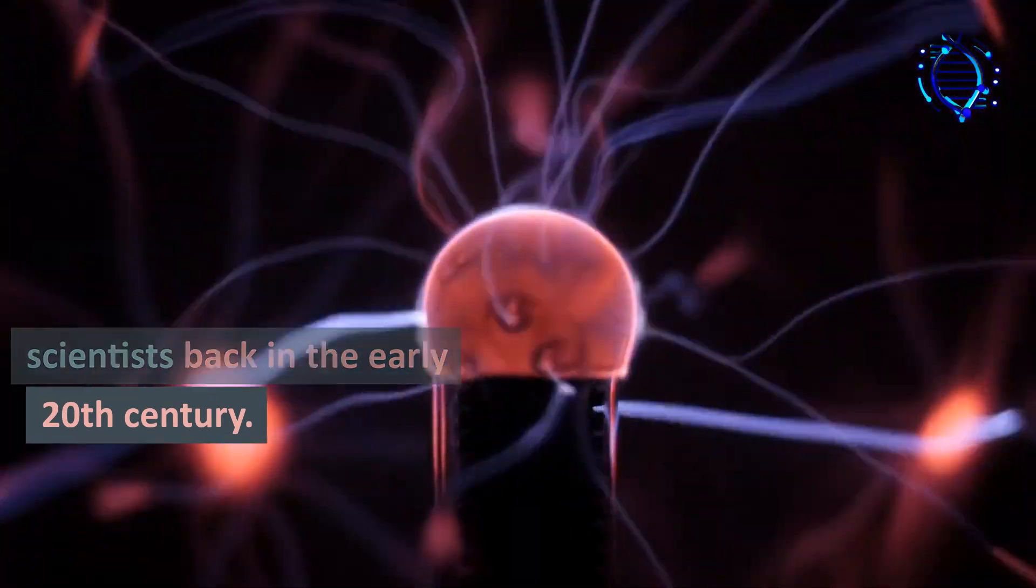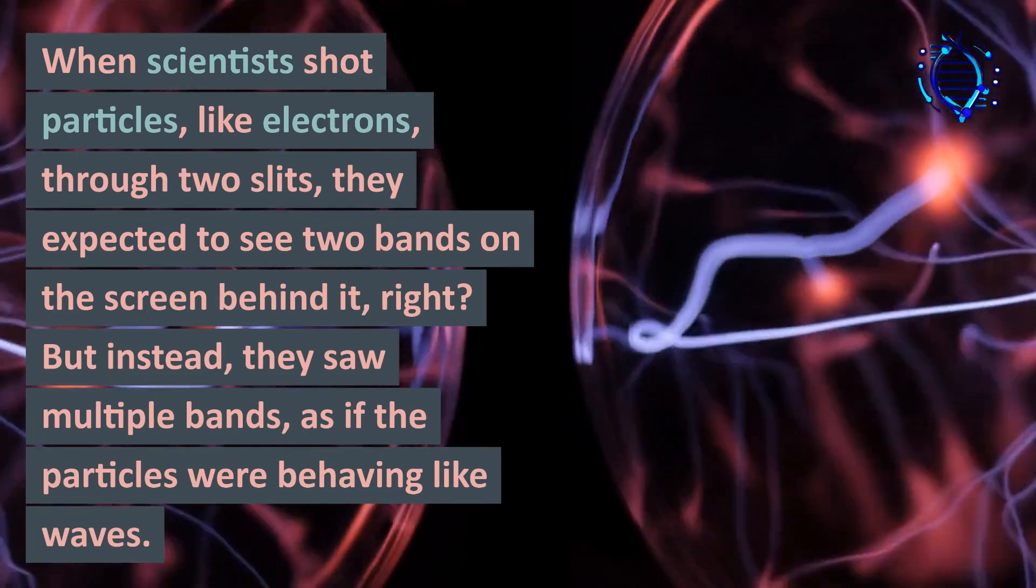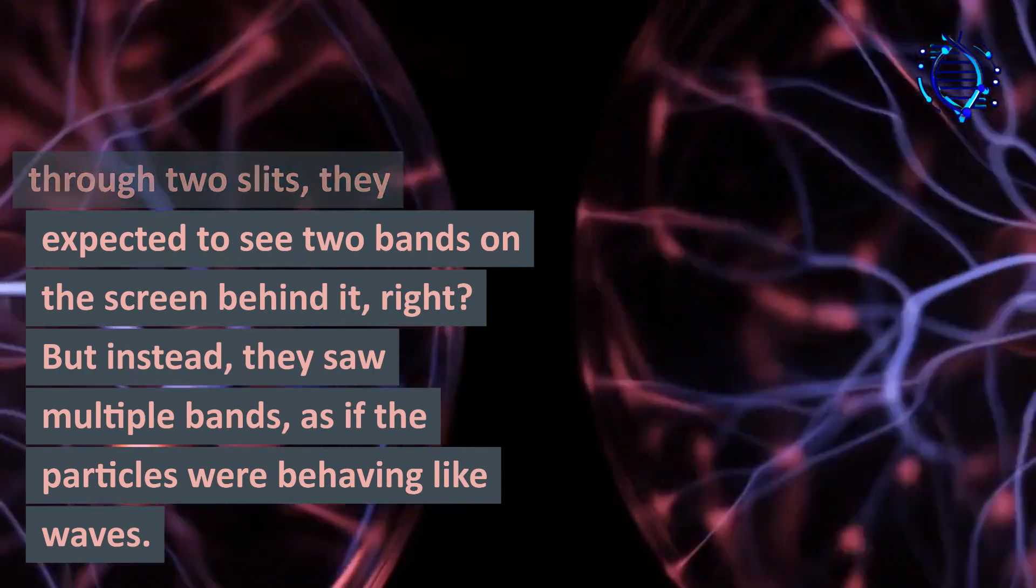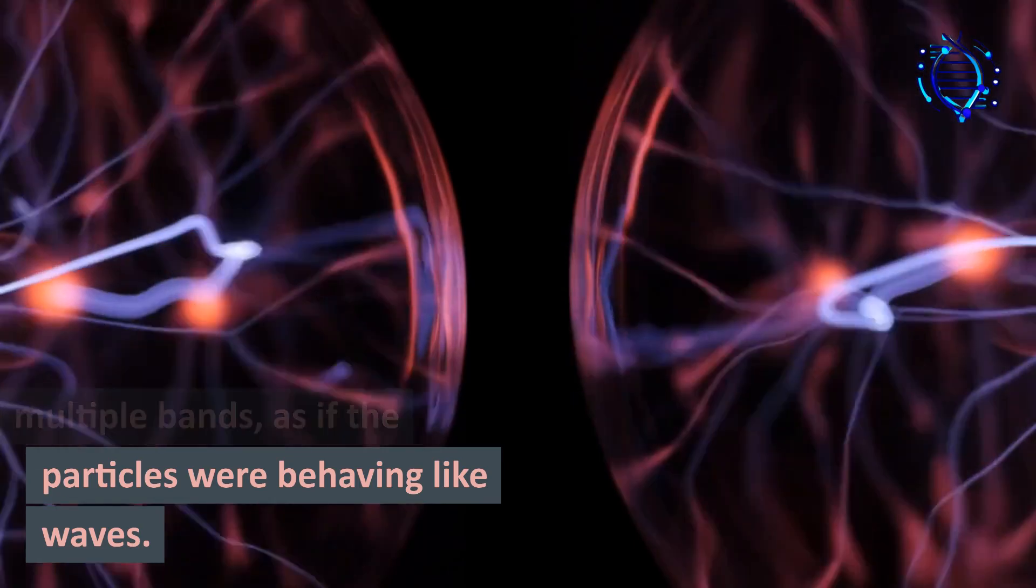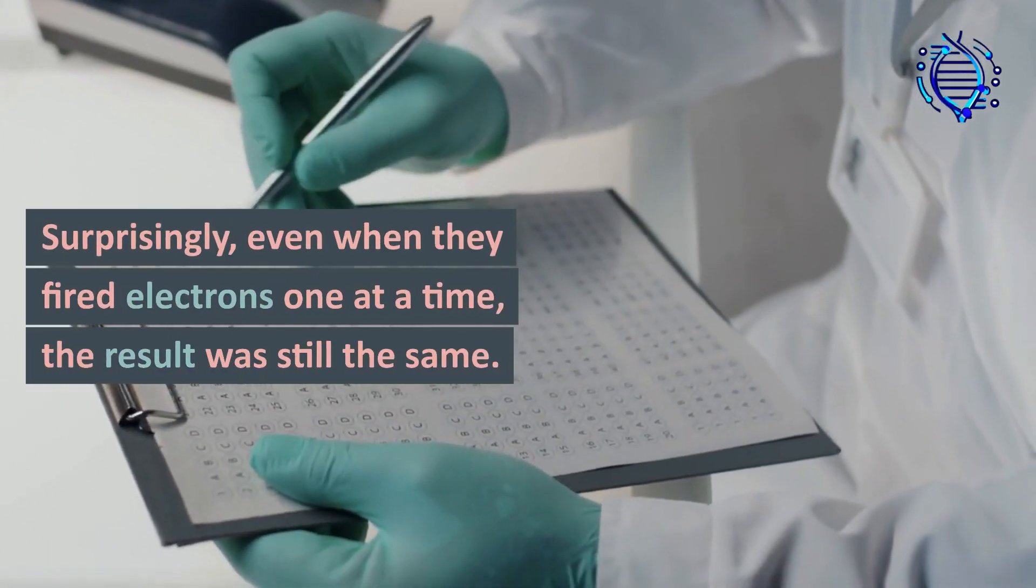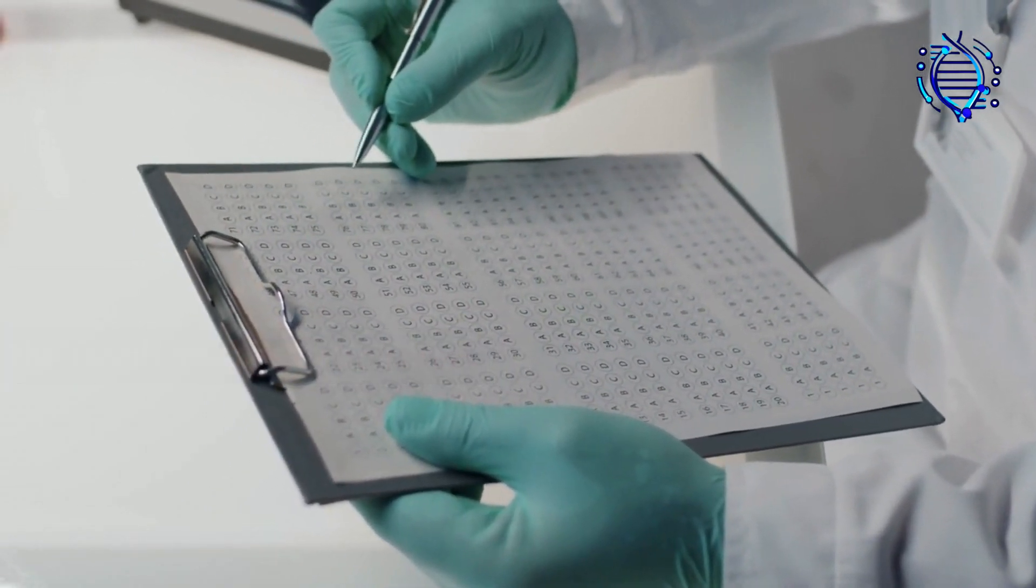Let's take, for instance, the famous double-slit experiment that baffled scientists back in the early 20th century. When scientists shot particles like electrons through two slits, they expected to see two bands on the screen behind it, right? But instead they saw multiple bands, as if the particles were behaving like waves.